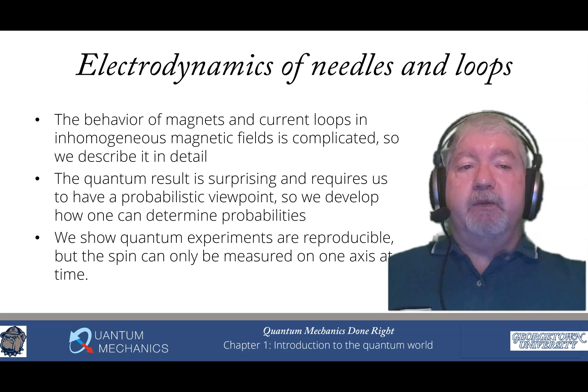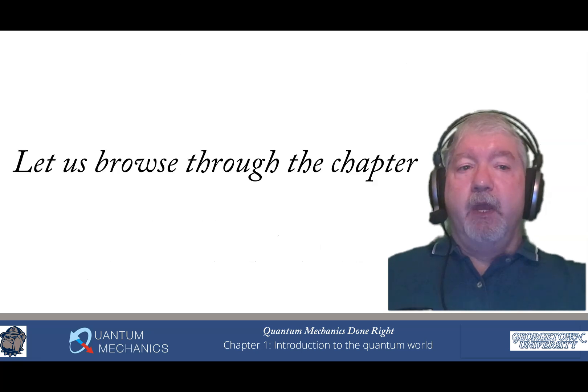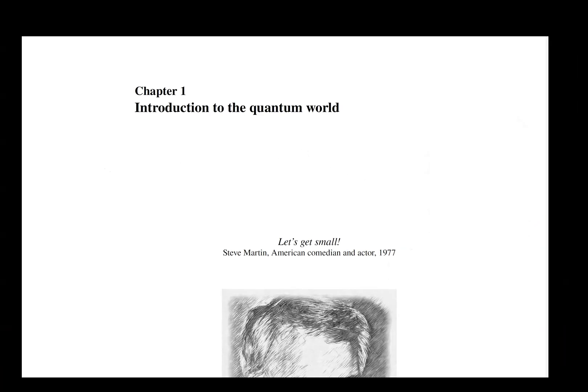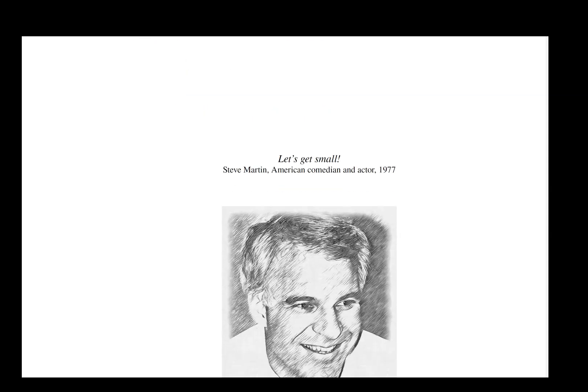And then finally, we do a series of experiments that show that the quantum experiments are reproducible, but that the spin can only be measured on one axis at a time. And this is a really important concept for you to understand as you're starting to learn about what is happening in the quantum world. All right. So let's go ahead and browse through the chapter.